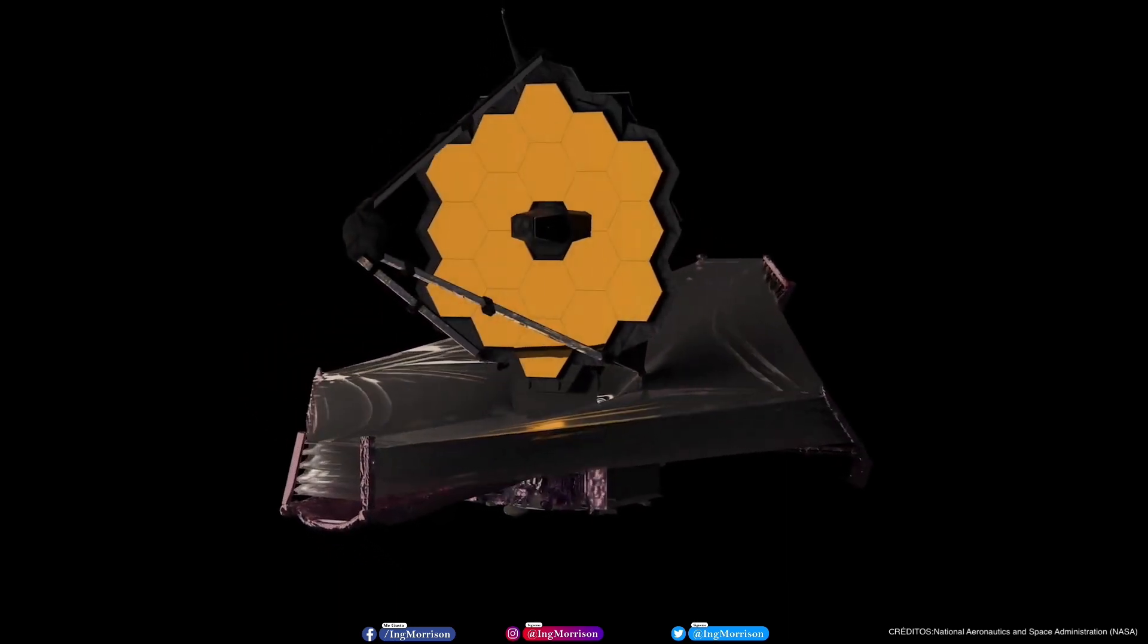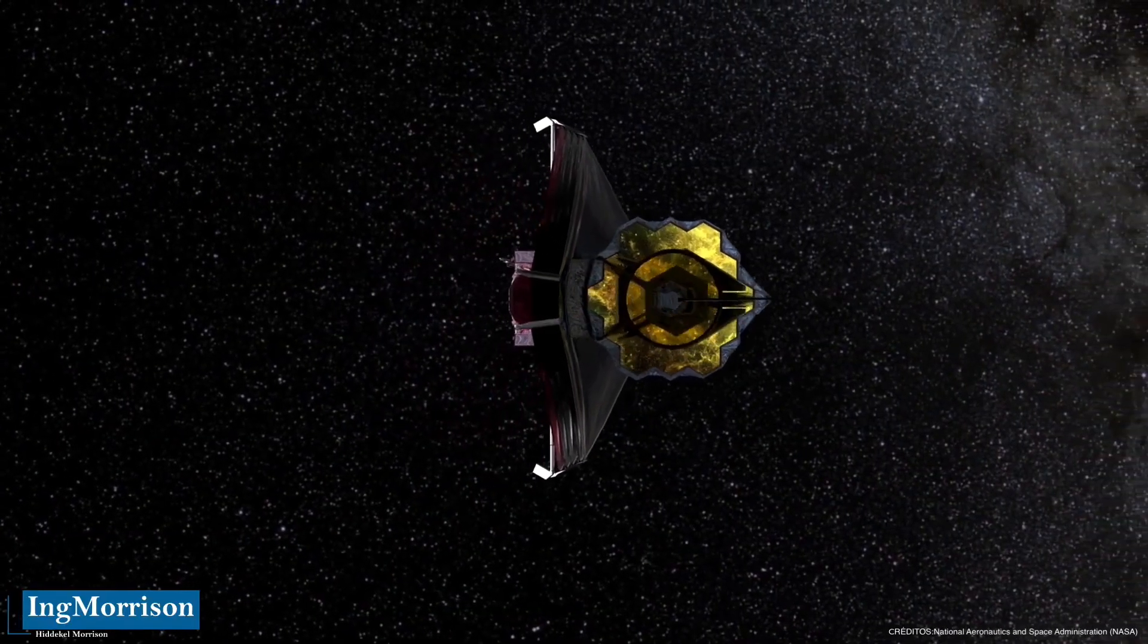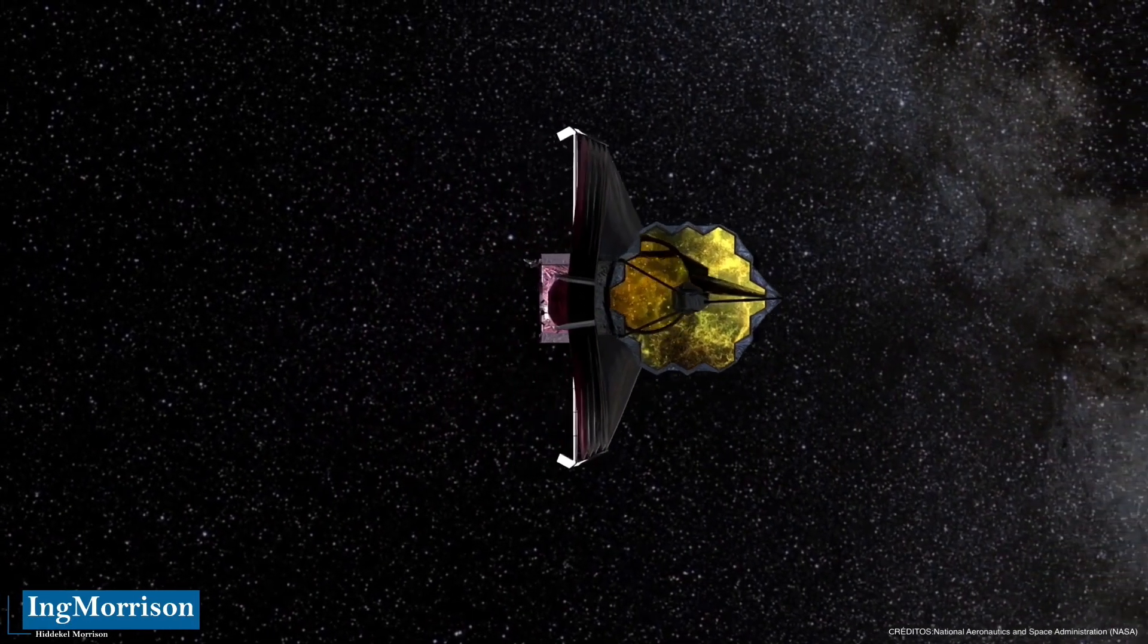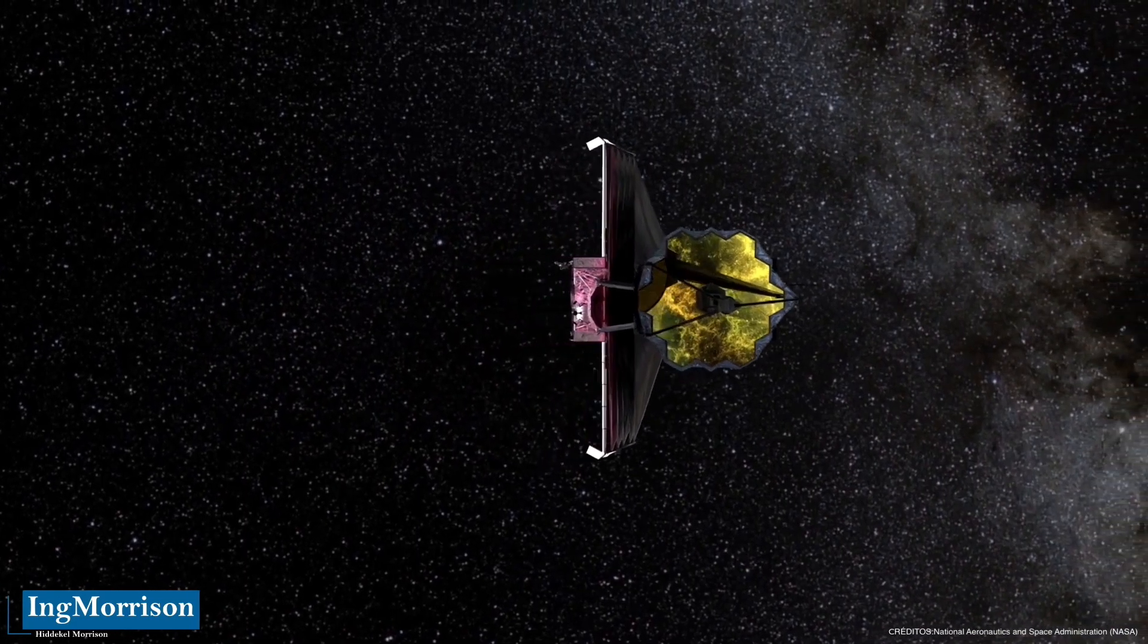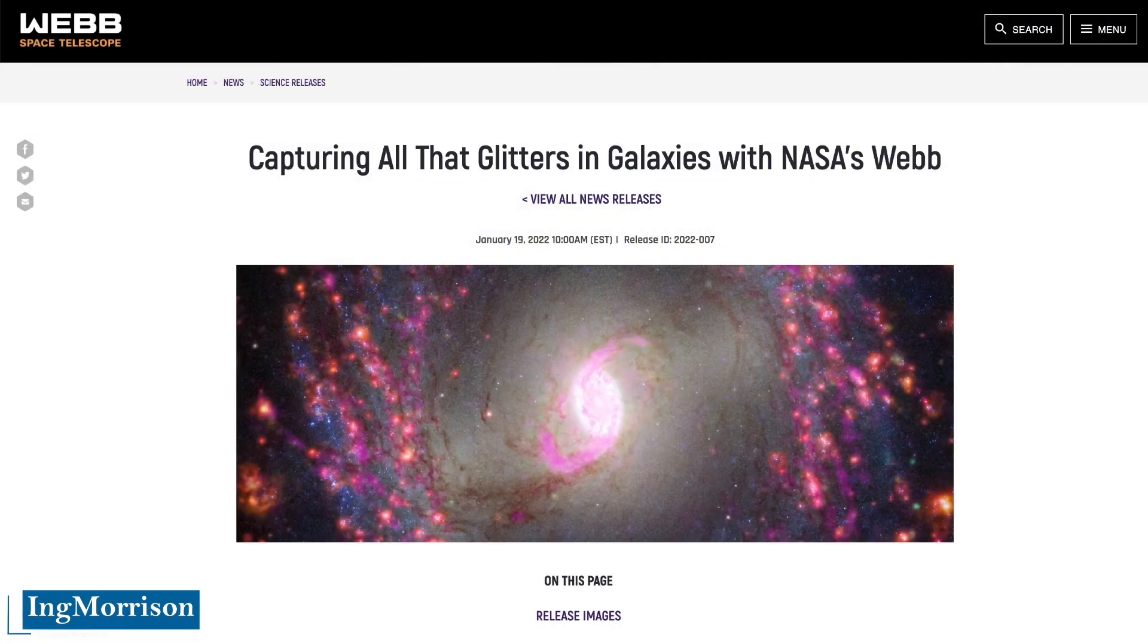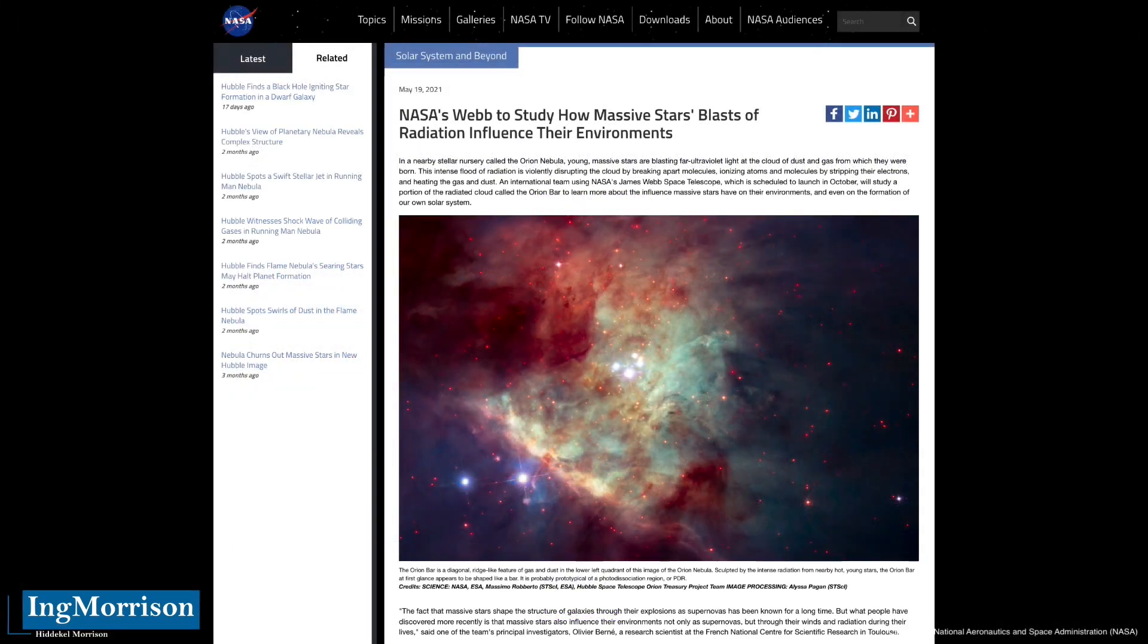The record of stars is of great value because among the many measurements and observations, NASA's James Webb Space Telescope will study how bursts of radiation from massive stars influence their environments. It will study a portion of the radiated cloud called Orion's bar to learn more about the influence massive stars have on their environments and even on the formation of our own solar system.